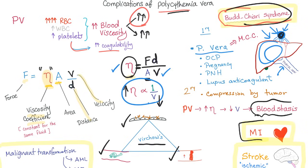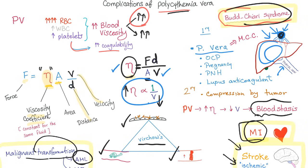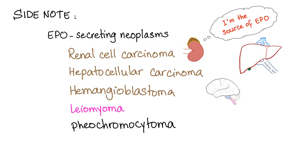If this thrombus occurs in a coronary artery, it leads to myocardial infarction. If it occurs in the brain, it leads to ischemic stroke. Another complication is malignant transformation: polycythemia vera can convert into acute myeloid leukemia and into myelofibrosis.